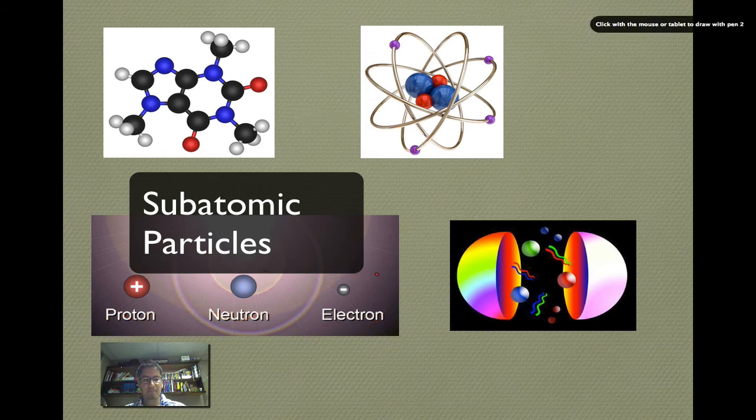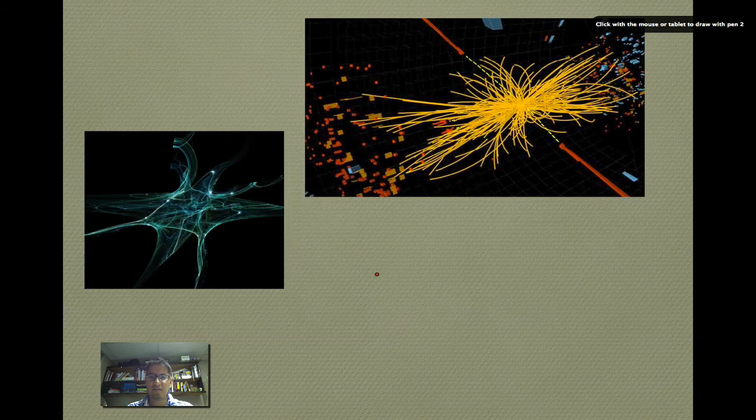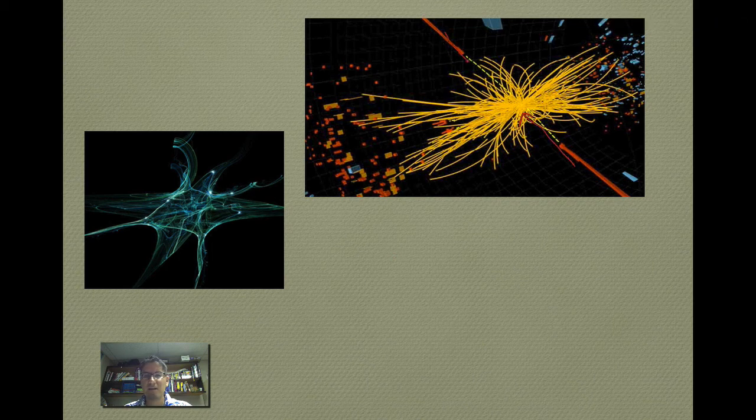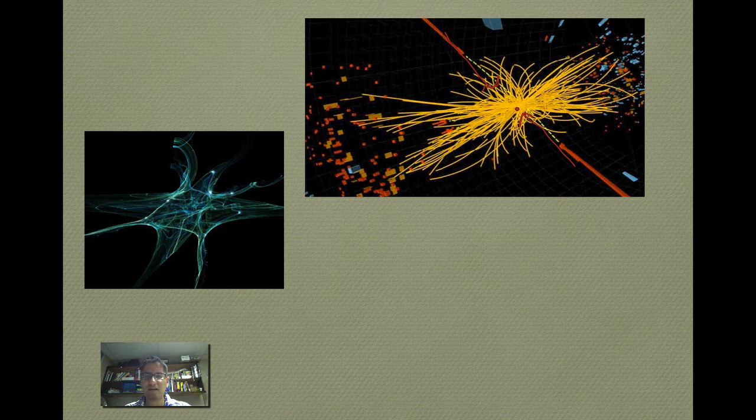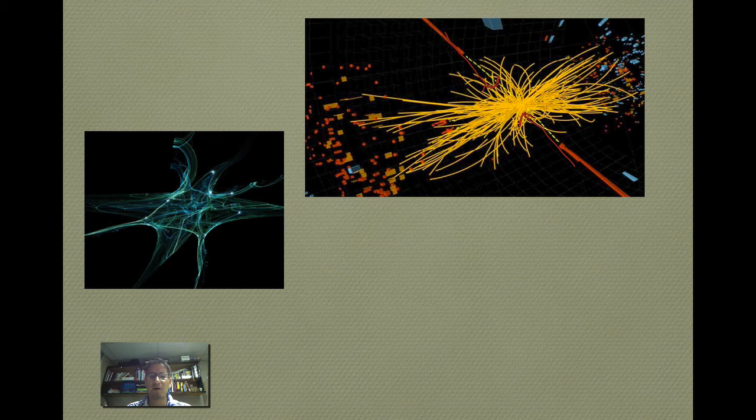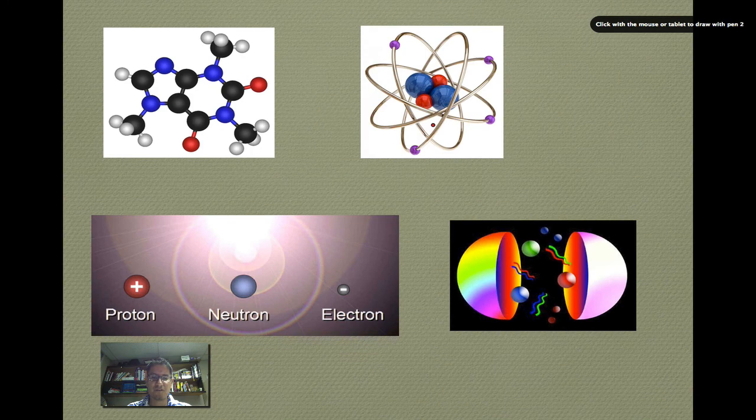Now we know, thanks to the most expensive scientific experiments ever, that you can actually take subatomic particles like protons and cause them to collide. And as you see, once a proton collides, it releases a whole mess of other particles, quarks. And you have hundreds, hundreds of different types of particles that make up protons, neutrons, and electrons.